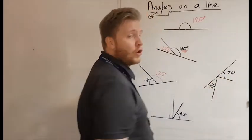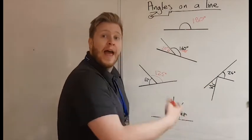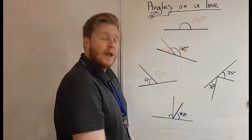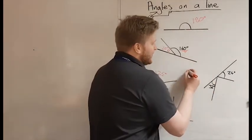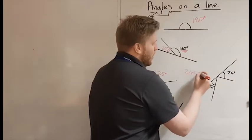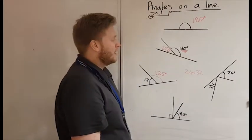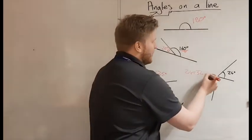Again, this one looks more complicated because we have two angles. However, it's still exactly the same, but this time what we've got to do is add 24 and 32 together first. So we add those two together, we would get 56 degrees.